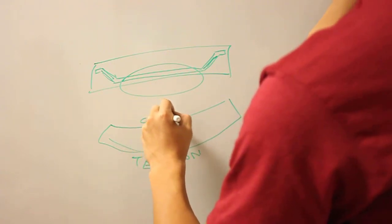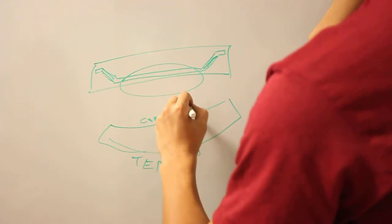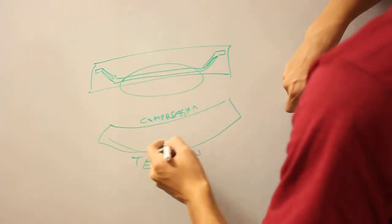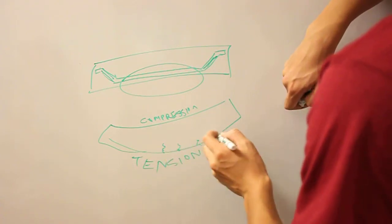And we know that concrete's fine with compression, so there's not going to be any cracking at the top here. It's going to be structurally sound. But the bottom is where there's problems, where you might see cracks here because it's actually elongating the concrete.